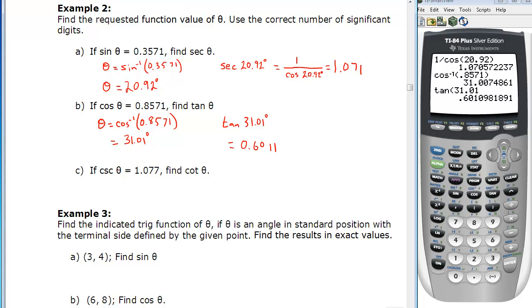The final example, we have cosecant theta. And we can't simply say theta then is cosecant inverse, because as you can see, our calculator doesn't have that button. It only has sine inverse, cosine inverse, or tan inverse. So to do cosecant, we have to remember that cosecant is the reciprocal of sine. So if we take the reciprocal of both sides, the reciprocal of cosecant is sine theta. And the reciprocal of 1.077 is 1 over 1.077. Now we can do it just like we did the first one.